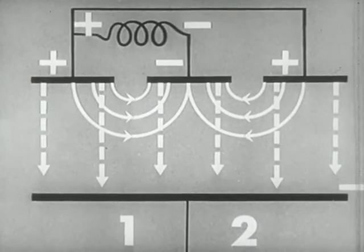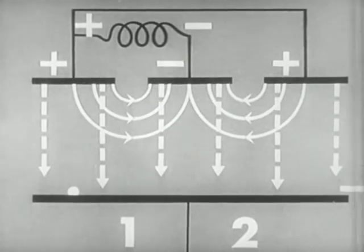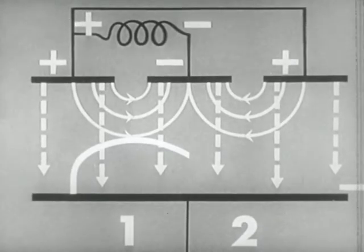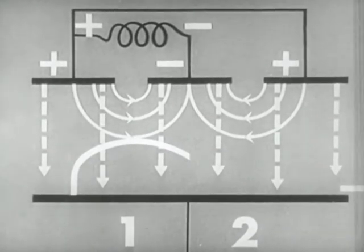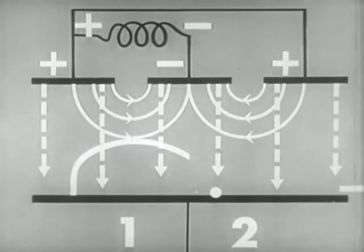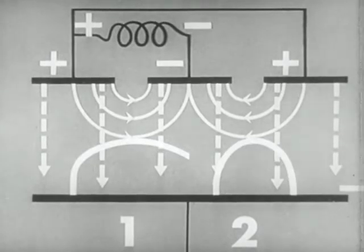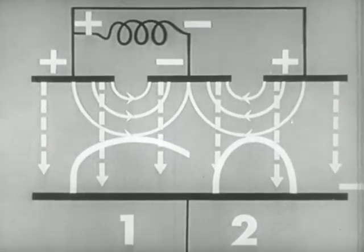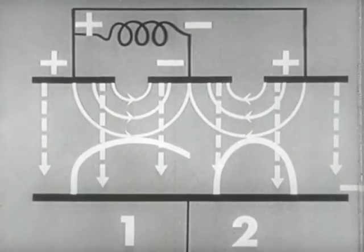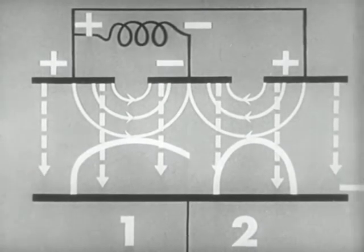Since electrons tend to move in cycloids at right angles to the direction of the electric field, an electron leaving the cathode in region one would move like this — it would strike an RF electric field in its proper phase relationship and give up energy to the RF field. However, an electron leaving the cathode and entering region two will not be in the proper phase relationship to give up energy to the RF field and will quickly be returned to the cathode. The net result is that more energy is given to the RF field by the electron in region one than is taken away from the field by the electron in region two.